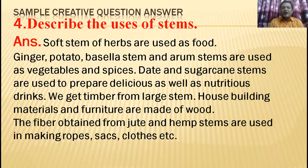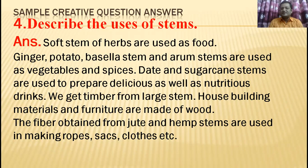Question 4: Describe the importance of stems. Stems of some plants are used as food — ginger, potato, and basella stems are used as vegetables or spices. Stems of sugarcane are used to produce delicious and nutritious drinks. We get timber from large stems, which is used as building materials and furniture. Fiber obtained from stems is used in making ropes, sacks, and clothes.